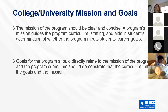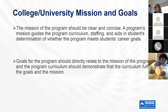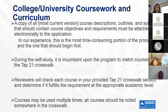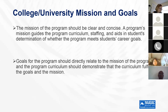Regarding the college or university mission and goals: the institution's goals should be clear and concise. In the United States, colleges and universities are typically accredited through the Higher Learning Commission or regional accreditation bodies. The program curriculum should meet the standards of higher education at the associate, bachelor's, master's, and doctoral levels, and the curriculum should directly fulfill the goals and mission of the college or university.